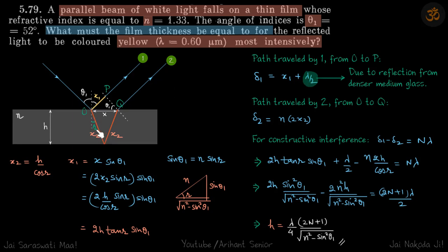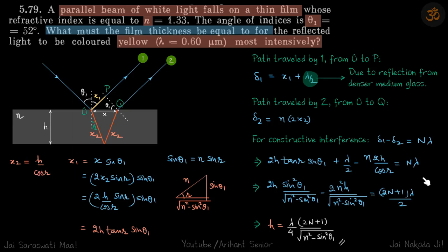For the ray that goes inside and reflects at the bottom, that reflection is from the rarer medium, so there is no phase change. When it emerges from point Q, the path difference of ray two from O to Q is simply 2 X2 times N, because it is traveling inside the medium. For constructive interference, delta one minus delta two must equal N lambda. Substituting the values: X1 plus lambda by two minus two N times X2 equals N lambda.